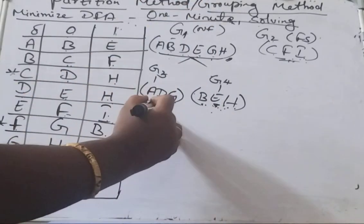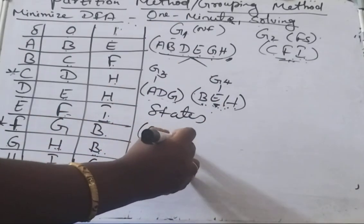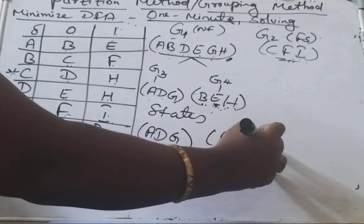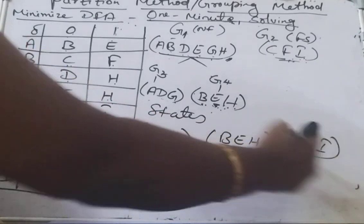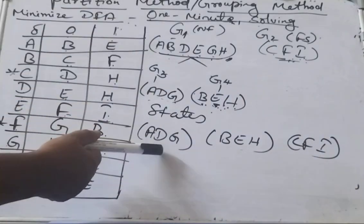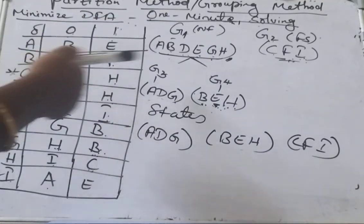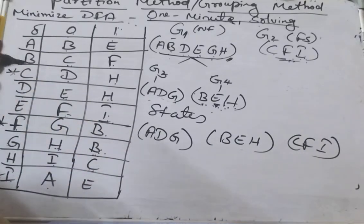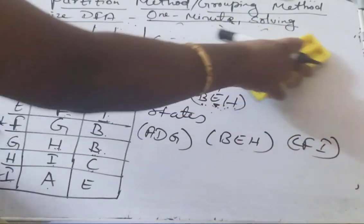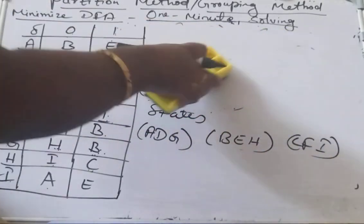So what are the states we got? Totally we got 3 states: A, D, G fall under one state; B, E, H fall under another state; and the third state is C, F, I. See how easily we reduced to 3 states — these 9 states got reduced to 3 states. This is the one-minute solution. Just by applying the grouping technique you can generate the number of states and easily cross verify your answer.